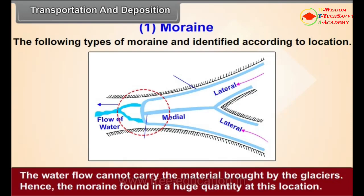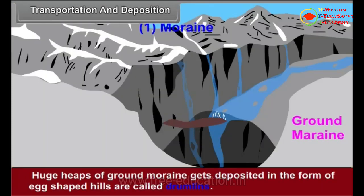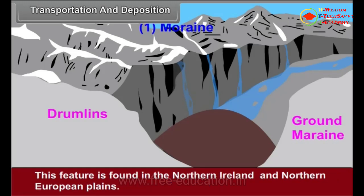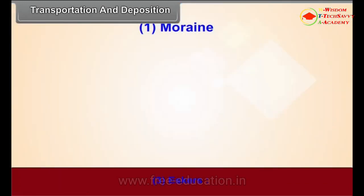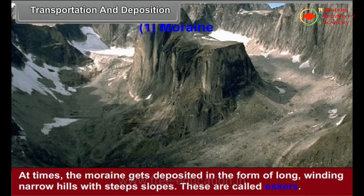Terminal moraine is at the end where a glacier turns into a stream of water. The water flow cannot carry the material brought by the glaciers. Hence, moraine is found in huge quantity at this location. As this moraine is found at the terminal part of a glacier, it is called terminal moraine. Drumlins: Huge heaps of ground moraines deposited in the form of egg-shaped hills are called drumlins. This feature is found in Northern Ireland and North European plains. Eskers: At times, the moraine gets deposited in the form of long, winding, narrow hills with steep slopes. These are called eskers.